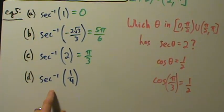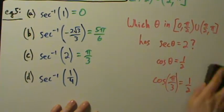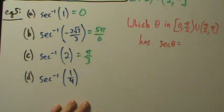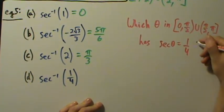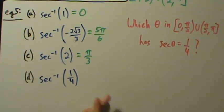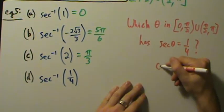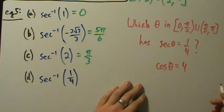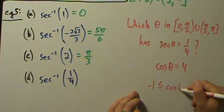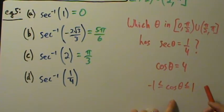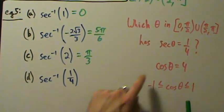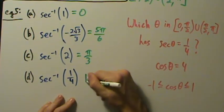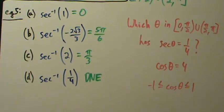Now part D: what about the inverse secant of 1/4? We want to be a little careful here. Which theta inside the interval has secant of theta equal to 1/4? We can take the reciprocal: cosine of theta equals 4. But that's never going to happen, because negative 1 ≤ cosine of theta ≤ 1 for any theta. So 4 is too big — cosine of theta can never equal 4, which means secant of theta can never be 1/4. This does not exist; there's no solution.